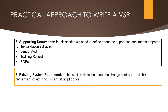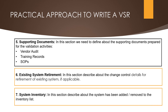The sixth component of the validation summary report is existing system retirement. In this section, if not applicable, we need to describe it as not applicable. The seventh component is system inventory. In this section we need to describe whether the system has been added or removed from the inventory list. As per GMP practice, an inventory list should be maintained for all systems available in the department, and this list needs to be updated once the system has been validated.